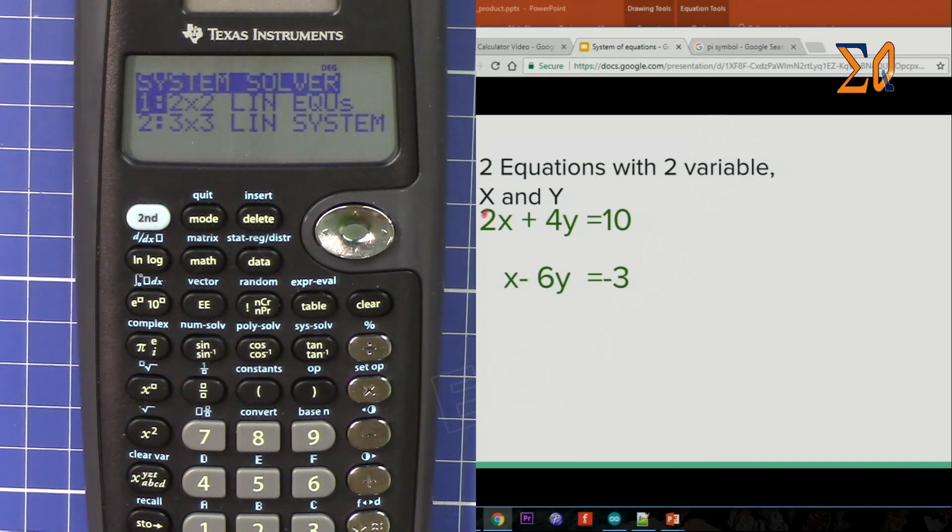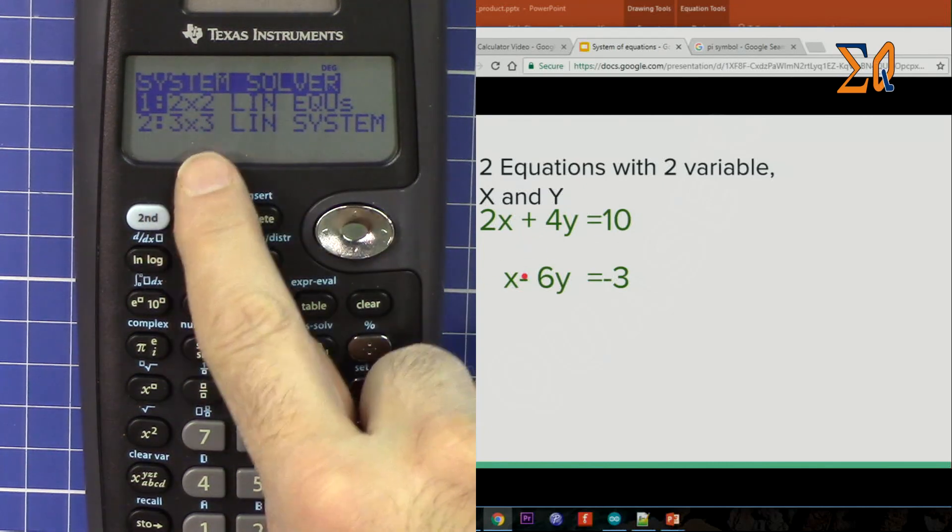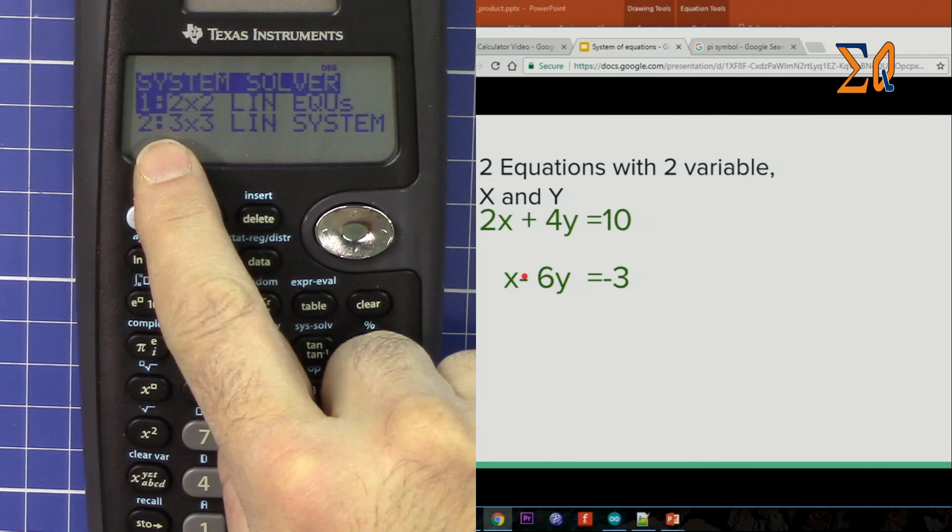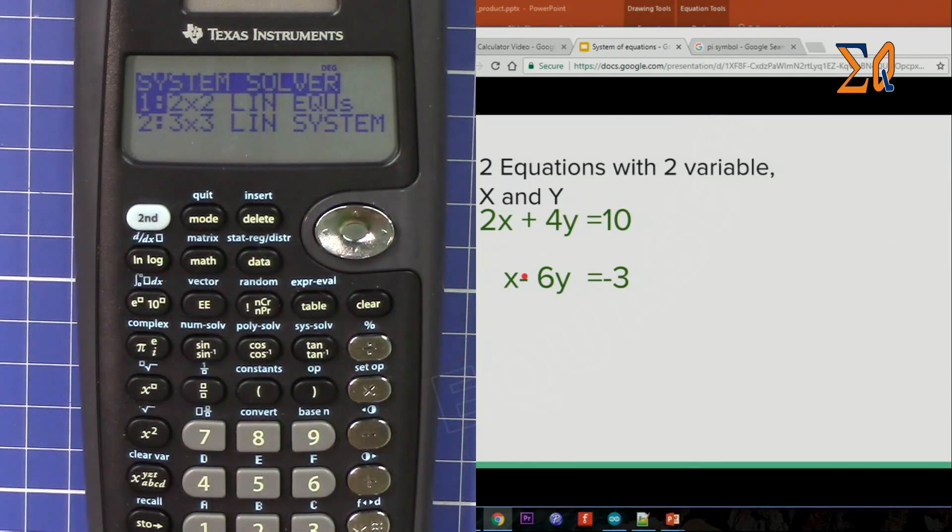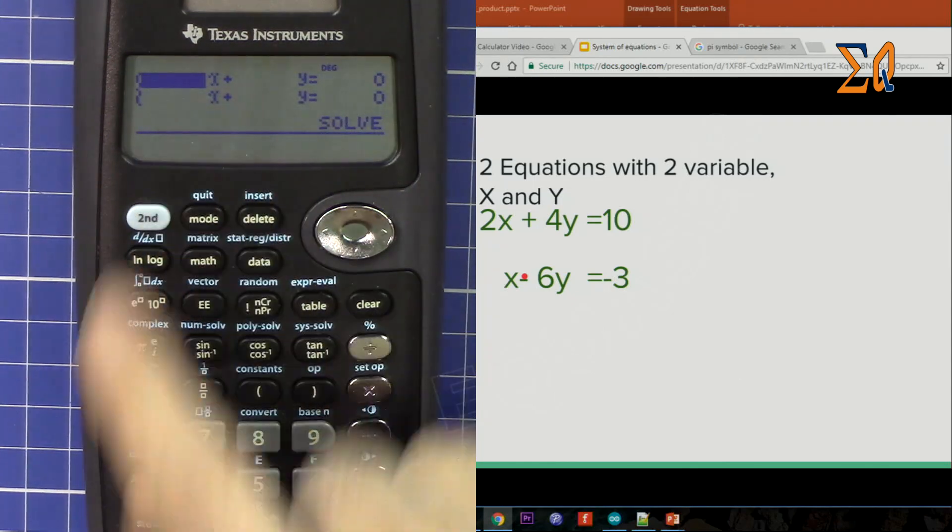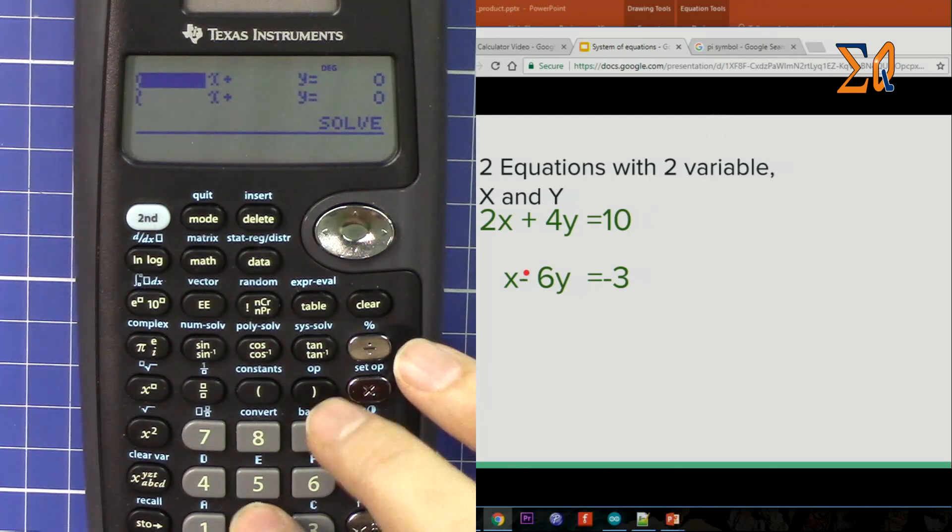In our case we have 2 by 2, which is two variables and two equations, and then three variables three equations which is next. I'm pressing 1 for the first option. Now it asks for the coefficient of x. I'm pressing 2 and then equal sign.